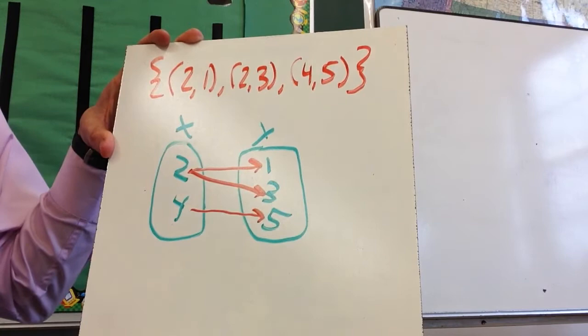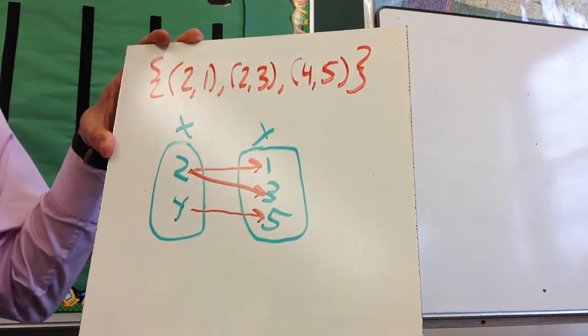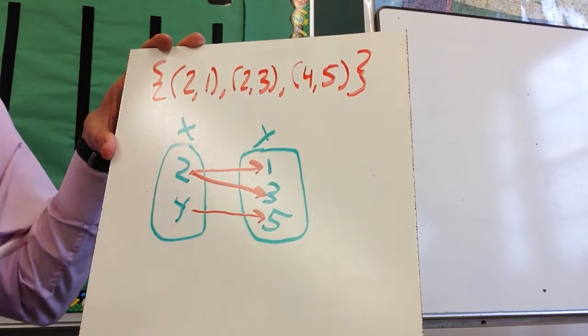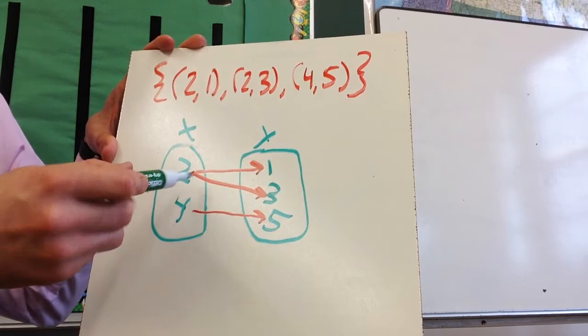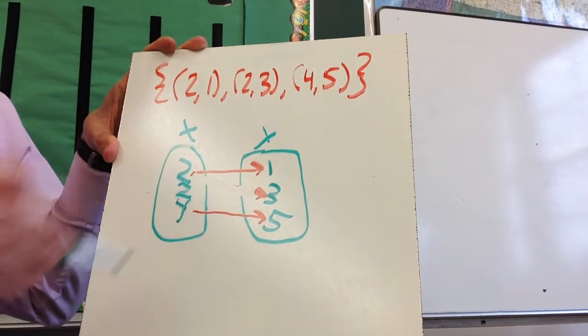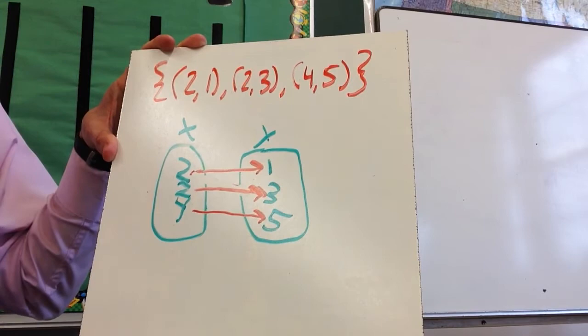And this is not a function because of these two arrows coming out of the 2. So even though each one goes to a different y, that doesn't matter. There are two arrows coming out of this x, meaning it is not a function. A function would just have one arrow out of each x. That's why it's really important that you don't write the 2 twice because if you were to write the 2 twice, this would look like a function because now all of a sudden there's one arrow coming out of each number, but this is the same number. You can't write it like that.